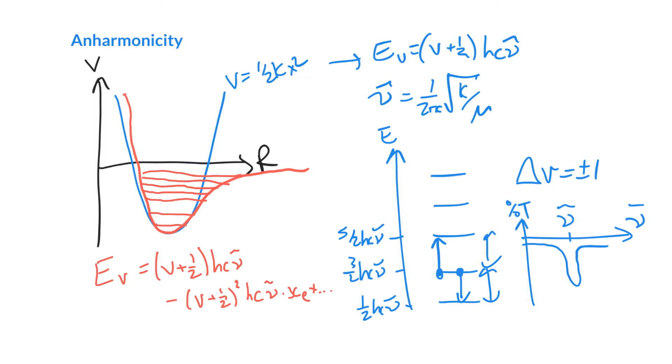This is our anharmonic energy term right here. So why anharmonic? Well, it turns out that a harmonic oscillator vibrates at a harmonic frequency, that is just one single frequency, but an anharmonic oscillator actually has additional frequencies mixed in.